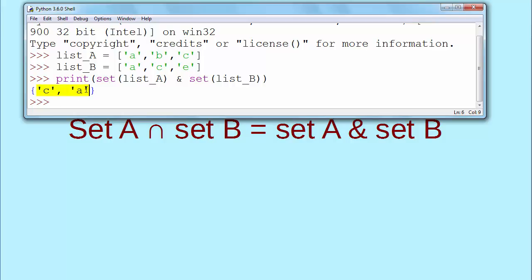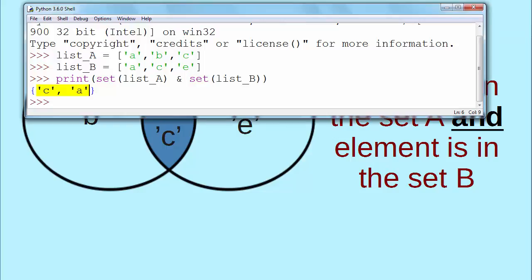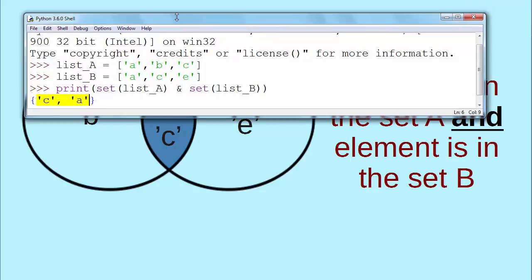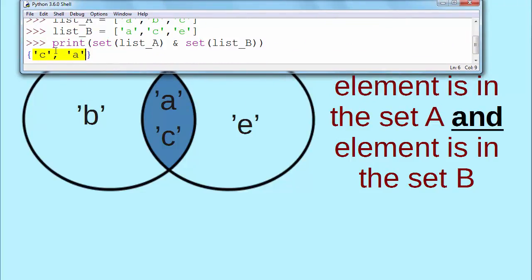C and A are elements common to both sets set A and set B. So our solution of intersection between two sets is A and C. If we look at Python Idle we could notice that we have the same result for intersection of sets A and B and lists A and B represents our sets.